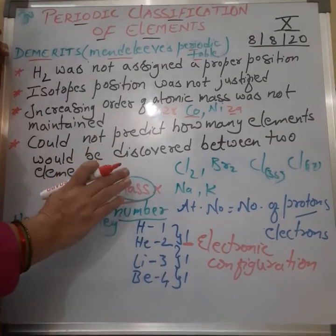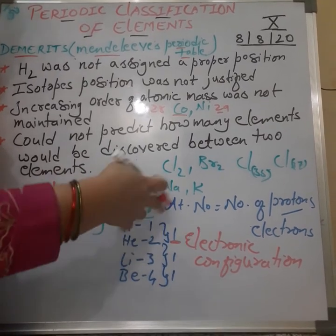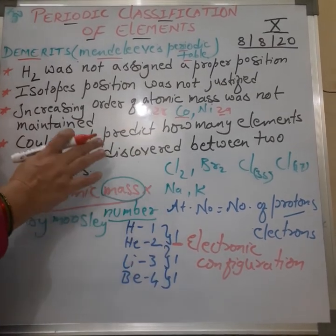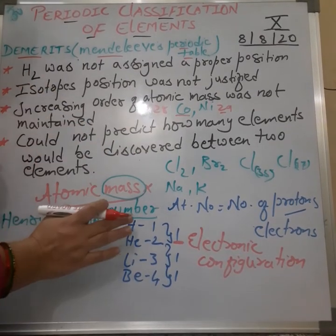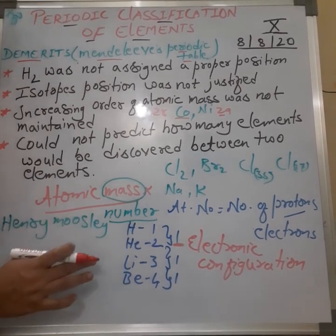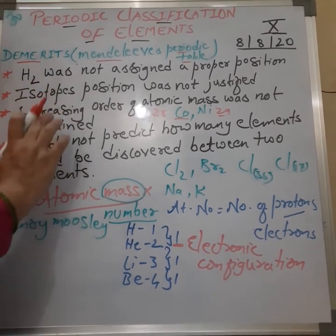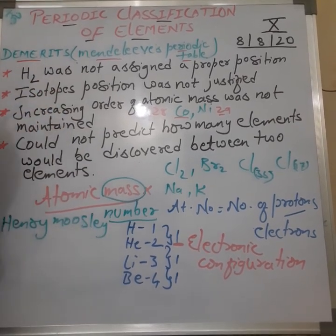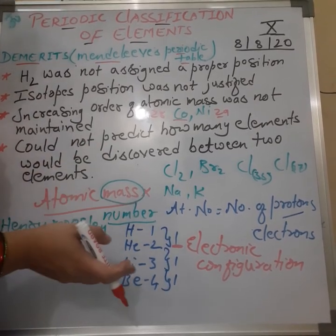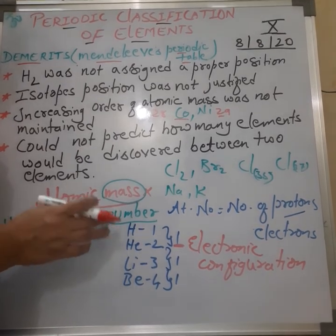We cannot say that the modern periodic table is a completely foolproof periodic table — it has its own limitations that we will discuss later. But most of the demerits of Mendeleev's table were clarified once atomic mass was shifted to atomic number. Today we discussed how Mendeleev's demerits have been justified by the modern periodic table. We will continue with the long form of the periodic table in our next session. Kindly go through the textbook. Thank you.